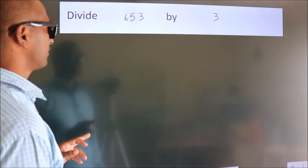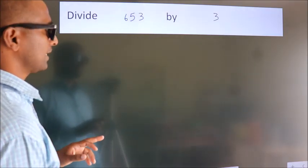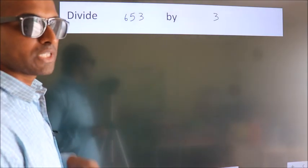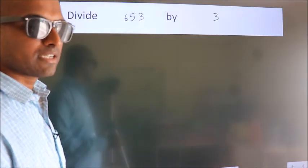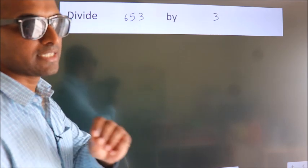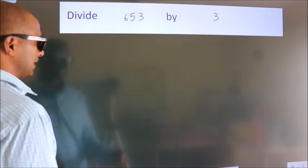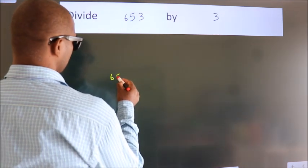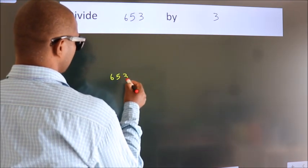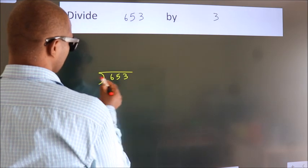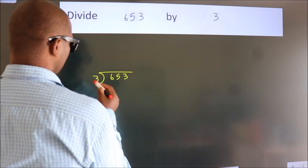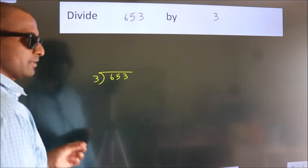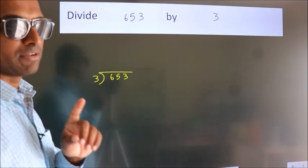Divide 653 by 3. To do this division, we should frame it in this way: 653 here, 3 here. This is your step 1.